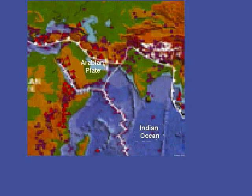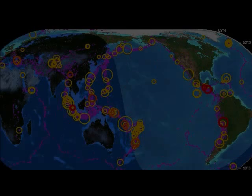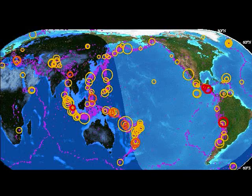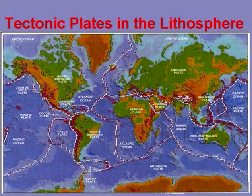We are sitting on the Arabian plate. In the early days, before the plate tectonic theory was proposed by Dr. Wegener, geologists were busy mapping the locations of volcanoes and earthquakes. Over time, they developed a pattern that generally traced the plate boundaries of today.